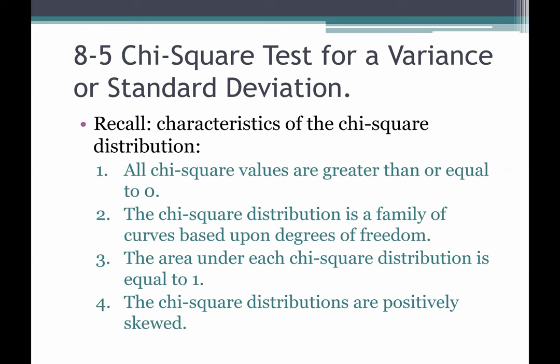Let's do a little recall about the characteristics of the chi-square distribution because we will be drawing and sketching it today to see where our rejection and non-rejection regions are. We didn't have to sketch it when we were introduced to it with confidence intervals, but today we will. So: all chi-square values are greater than or equal to zero — everything is positive. It's a family of curves, we'll see degrees of freedom again. The area under the distribution equals one, and the chi-square distributions are all positively skewed.